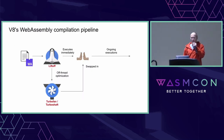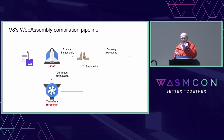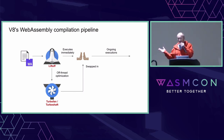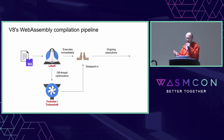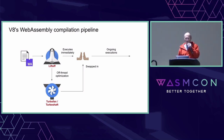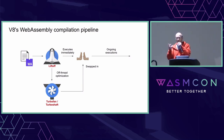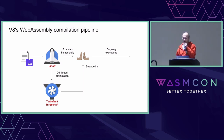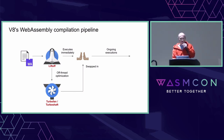Let's talk about WebAssembly's compilation pipeline in V8. We start with the WebAssembly module, which gets lazily compiled by the Liftoff engine and executed immediately. The system then detects hot paths and hot functions, which get handed off to the Turbofan — or soon Turboshaft — optimizing compilers. After optimization, the previous Liftoff code is transparently swapped out for maximum performance in ongoing executions.